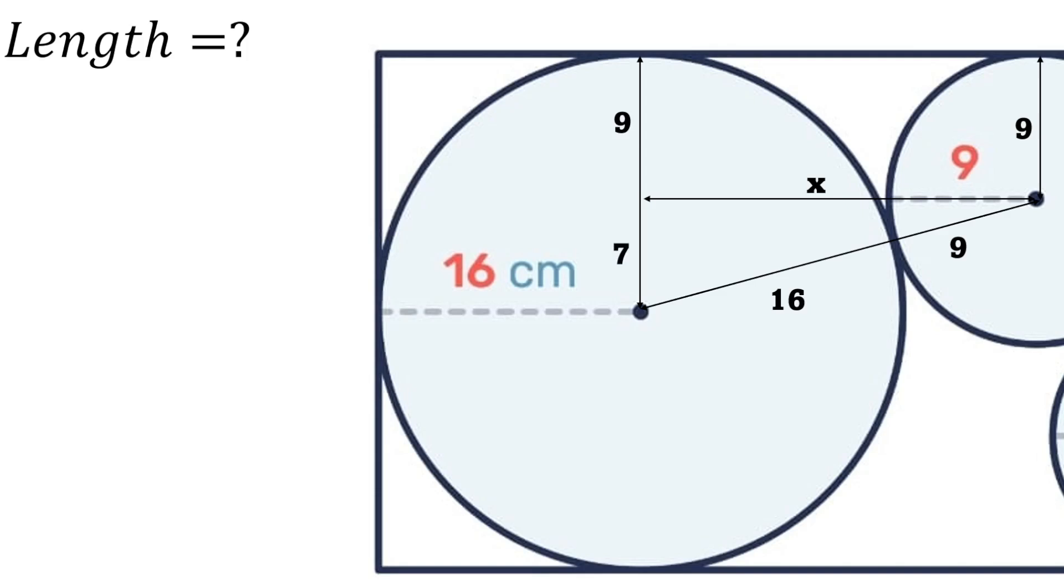If that is 9, 9 from 16 leaves us with 7. So when we look at our right angle triangle that we have constructed, we have that the hypotenuse is 16 plus 9, which is 25.